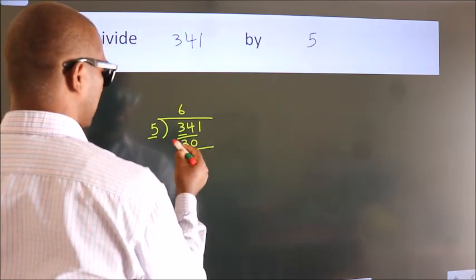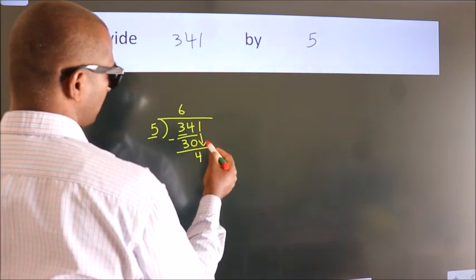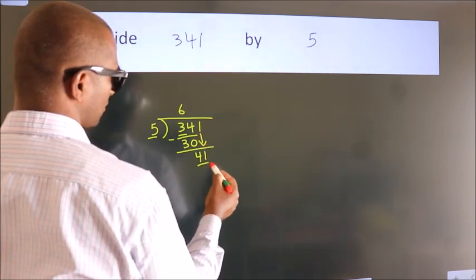Now we should subtract, we get 4. After this, bring down the beside number, so 1 down, making 41.